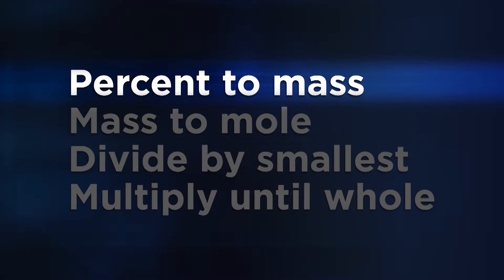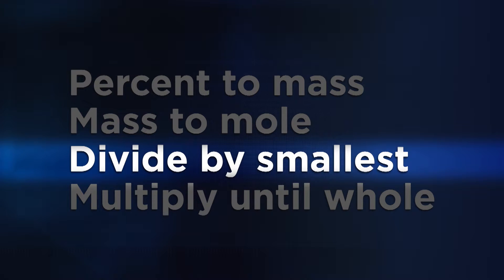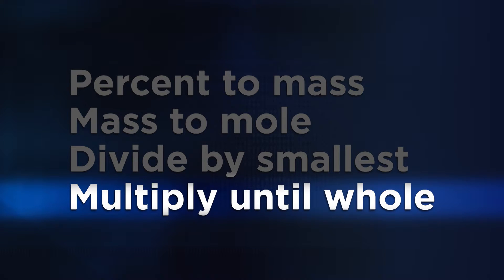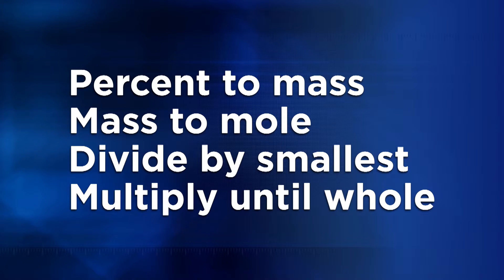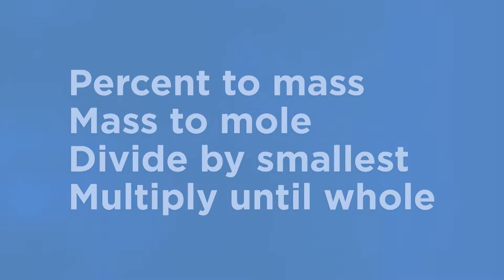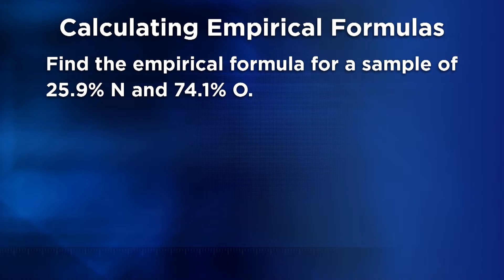There's a little rhyme that can help you remember the steps when solving for an empirical formula: percent to mass, mass to mole, divide by smallest, multiply until whole. This rhyme will make more sense once we try to determine an empirical formula. Let's work an example to illustrate these steps. This problem asks us to find the empirical formula for a sample of a compound that is 25.9% nitrogen and 74.1% oxygen.